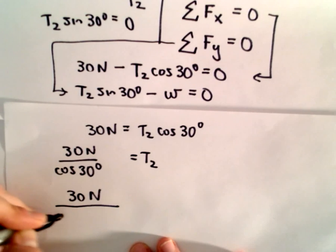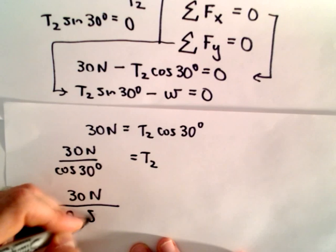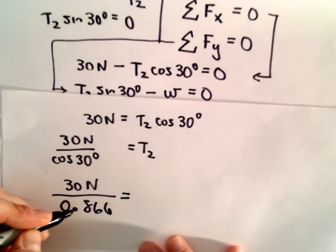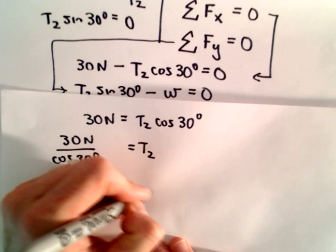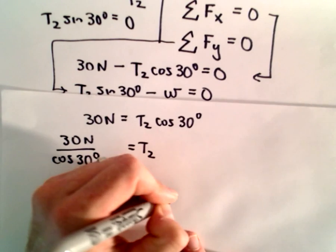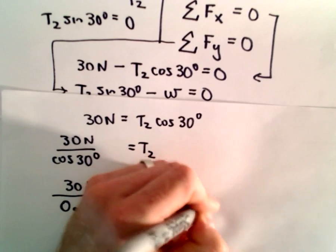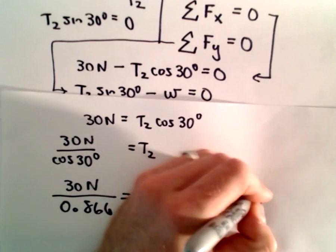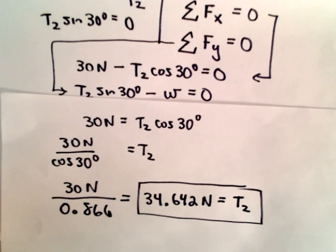So 30 divided by 0.866, I'm getting that to be 34.642 newtons. That's going to be the tension, the tension in our second cord.